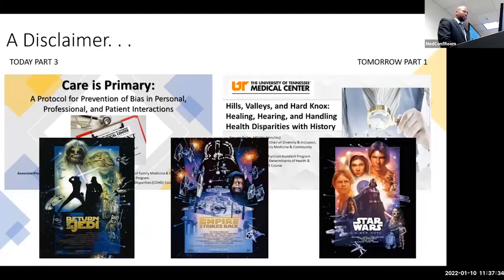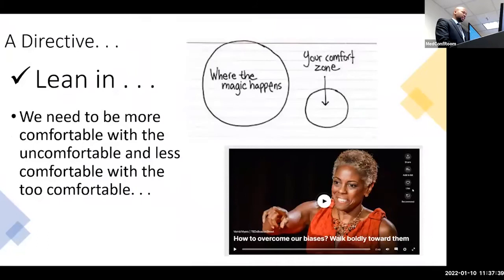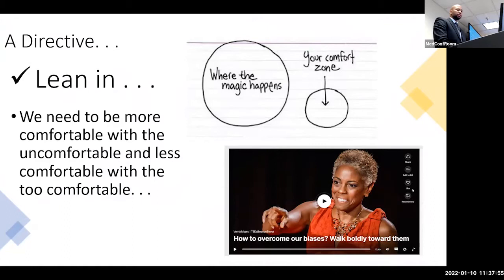I always ask, as I enter into these discussions, to have community guidelines. You've seen ground rules in presentations no doubt. This is from Dr. Werner Myers, who has a great TED Talk about overcoming biases and walking boldly towards them. What that means is leaning in. I believe the magic happens outside of your comfort zone. As we engage in discussions around identity, space, and place, I really think we should become more comfortable with the uncomfortable and less comfortable with the too comfortable.